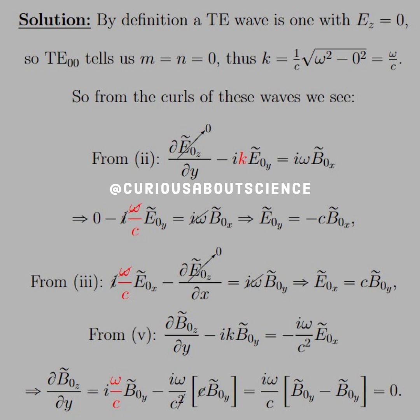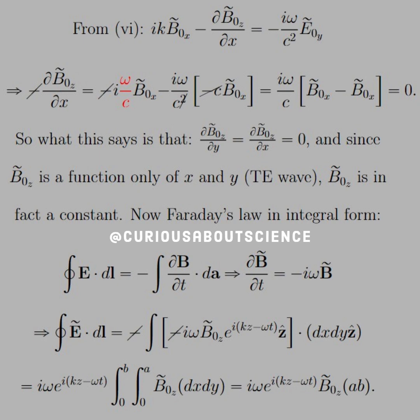Okay, cool thing. So, as we see, we get some more 0s. And if we do the same thing from 6 and substitute in what we found from E0y, push everything to the partial over, cancel out the negatives and the c's, we see that we get B0x minus B0x equals 0. So what this says is that partial of B0z with respect to y and partial of B0z with respect to x is equal to 0. And since B0z is equal to a function of only x and y, a TE wave, B0z is, in fact, a constant.